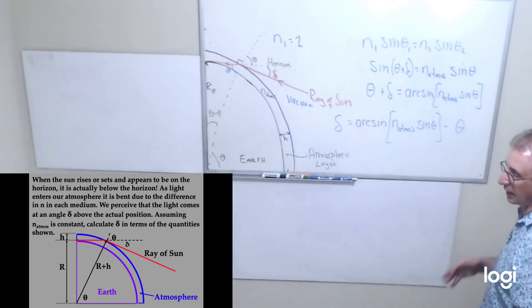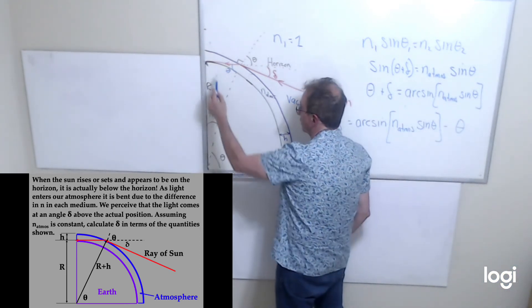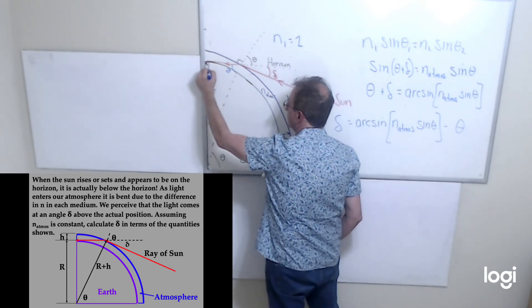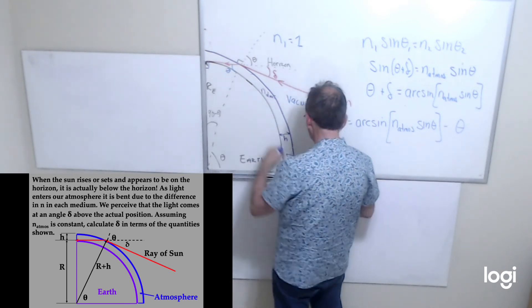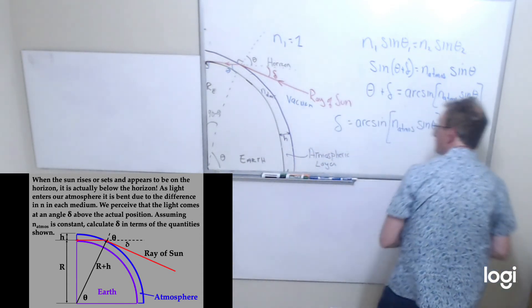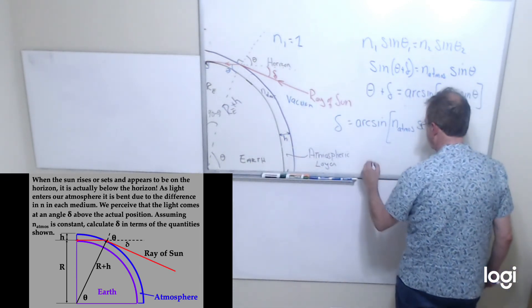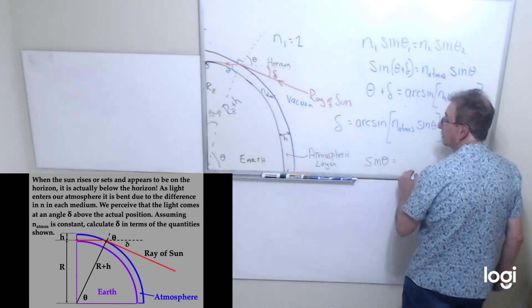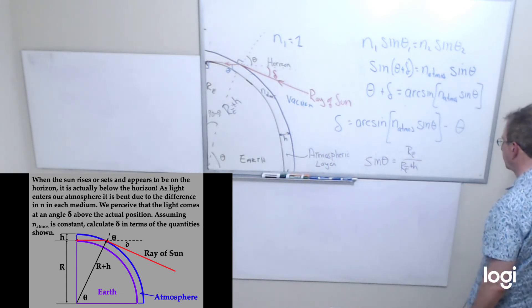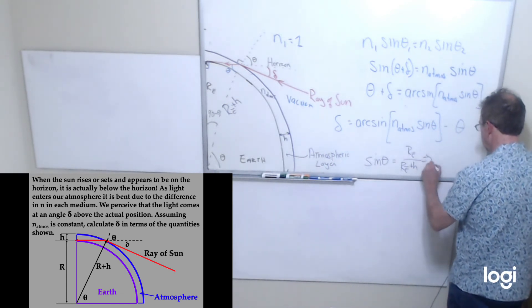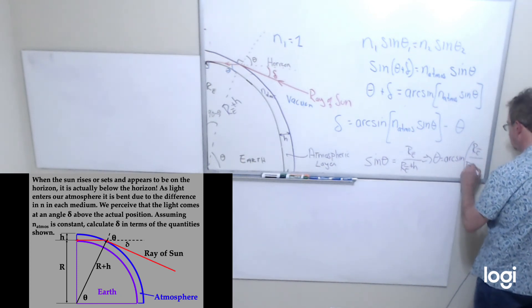But we're not done yet because we can figure out what the angle theta is in terms of our known quantities. If you look at this, the radius of the earth is opposite this hypotenuse. This is a right angle. So this guy is opposite the hypotenuse. The hypotenuse is the radius of the earth plus H. So the hypotenuse of our right triangle is R_E plus H. So sin(theta) is R_E over R_E plus H. That means then that theta is the arcsin of R_E over R_E plus H.